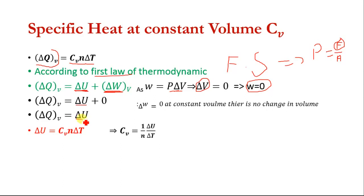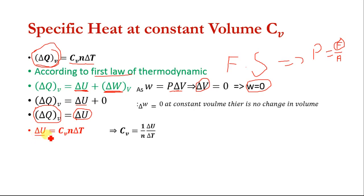The heat which we provide to the system at constant volume results in an increase in the internal energy of the system. Putting the value of del Q_V into the equation for specific heat at constant volume, we get del U equal to C_V n del T. So the change in internal energy of the system equals the specific heat at constant volume times number of moles times change in temperature.